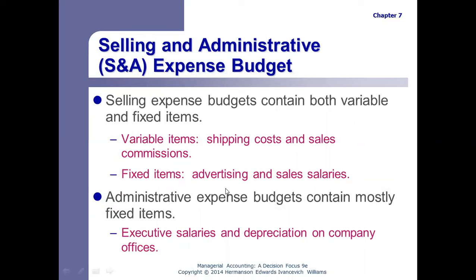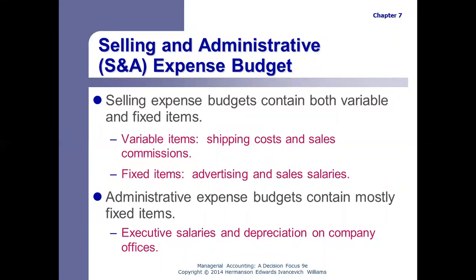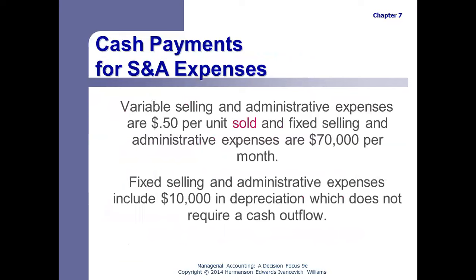For selling and administrative expenses, variable costs may include things like shipping costs — the more you sell, the more shipping costs go up — and sales commissions. Administrative costs are mostly fixed costs: salaries, depreciation on machinery and equipment in the corporate offices. So selling expenses contain elements of both variable and fixed costs.